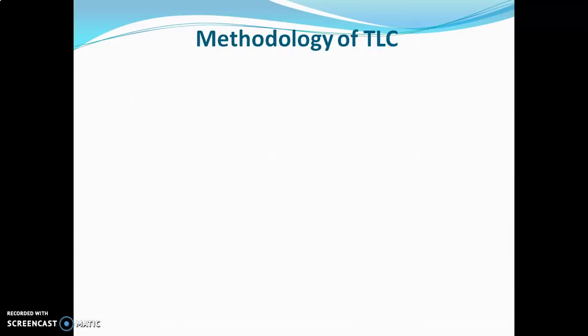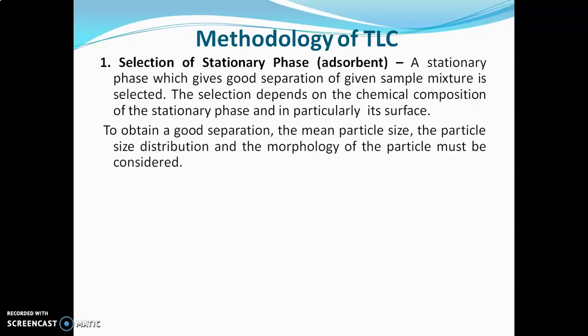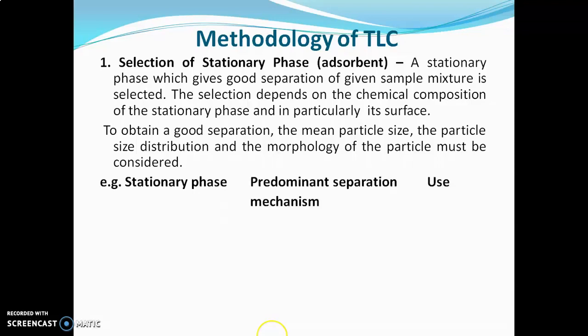Now we will go for the methodology of TLC. The first point is selection of stationary phase, that is adsorbent. A stationary phase which gives good separation of the given sample mixture is selected. The selection depends on chemical composition of the stationary phase and particularly its surface. To obtain good separation, the mean particle size, particle size distribution and morphology of the particle must be considered. Generally for TLC, the particle size distribution is 2 to 10 micrometers. Here are some examples: silica gel, whose separation mechanism is adsorption or partition — the exact mechanism is not known — and it is generally used for all types of samples.